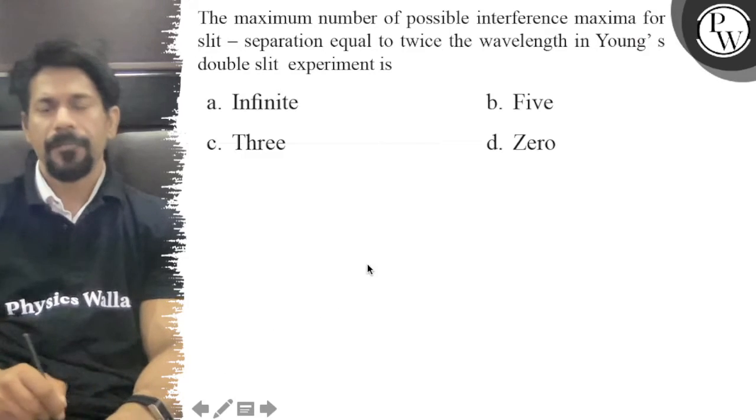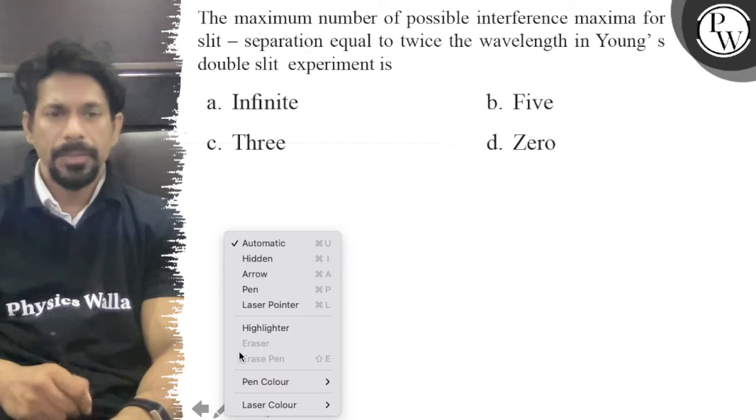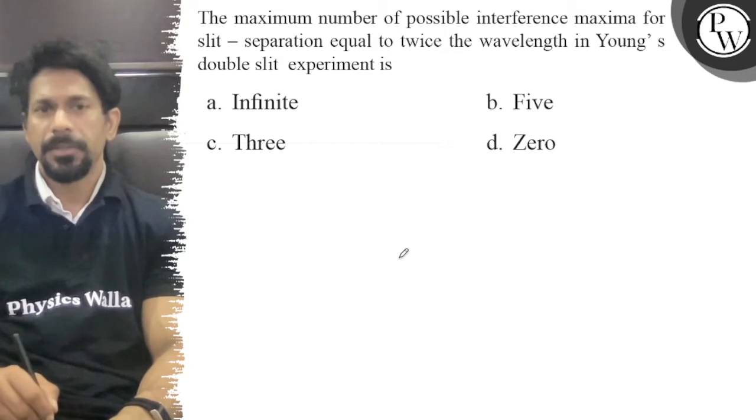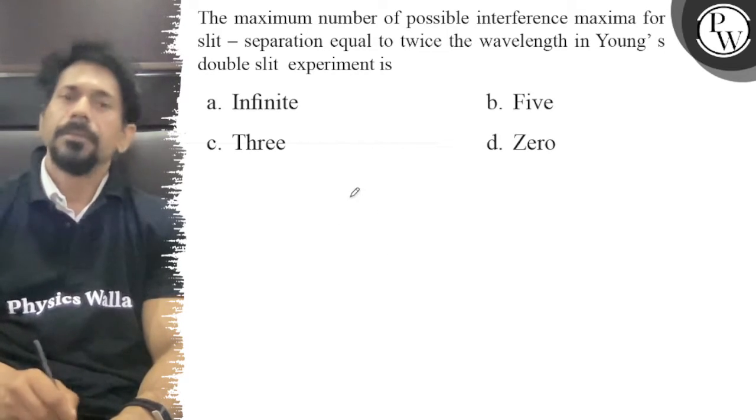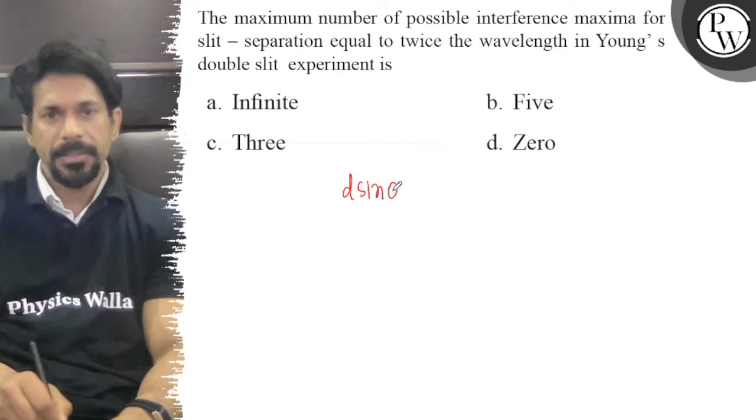Hello, let's see the question. The maximum number of possible interference maxima for slit separation equal to twice the wavelength in Young's double slit experiment. So basically for the maxima we know d sin θ equals n lambda.